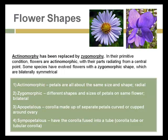Flower shapes vary dramatically. In evolutionary terms, actinomorphic flowers radiate from a central point. Others have a zygomorphic shape — as in the case of a pansy — where if you cut them in half up and down, they're still symmetrical. Additional terms relating to flower shape include apopeletus, where the corolla is made up of separate petals curved or cupped around the ovary, or sympopeletus, where the corolla is fused into a tube.